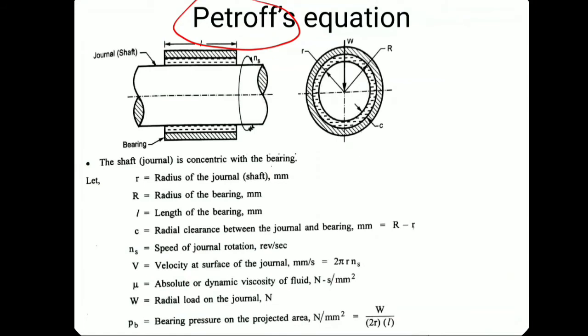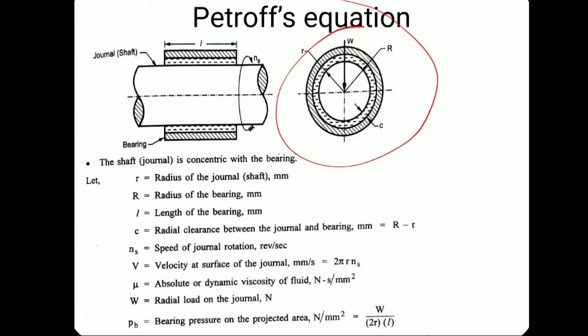Basically, in the case of the sliding contact bearing, we cannot find the torque developed in the system. The shaft rotates inside the lubricant inside the bush, and it requires some torque to balance the lubricant. There are two types of torque: first, the torque due to viscous drag because of the rotary motion, and second, the frictional torque. Petroff considered both of these.